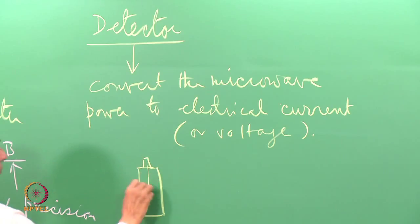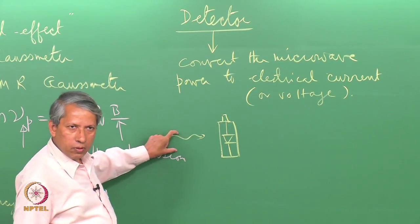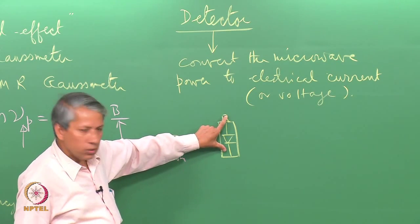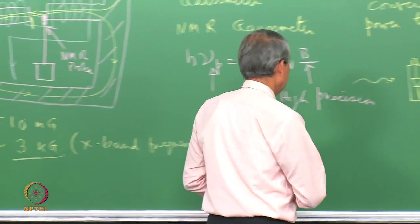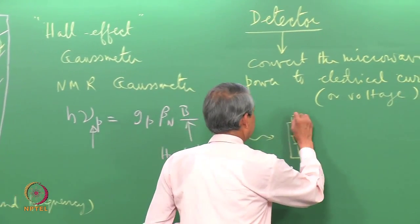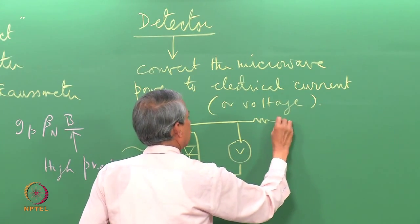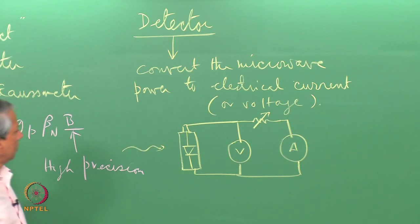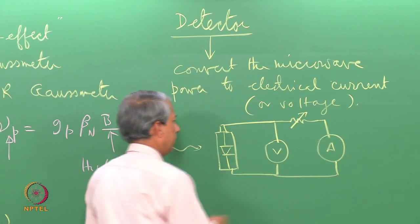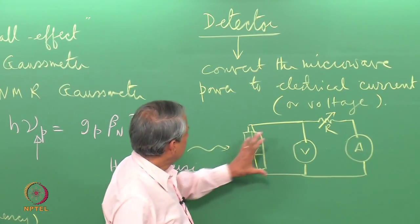The detector that is used in EPR spectroscopy is usually a silicon diode, something like this. This is a diode kept inside. When radiation falls on this, it looks at the electric field of the microwave and current is produced here, which is related to the intensity of the microwave. I can put a voltmeter and resistance and current meter. By adjusting the variable resistance, I can vary the current. This is a simple detector.